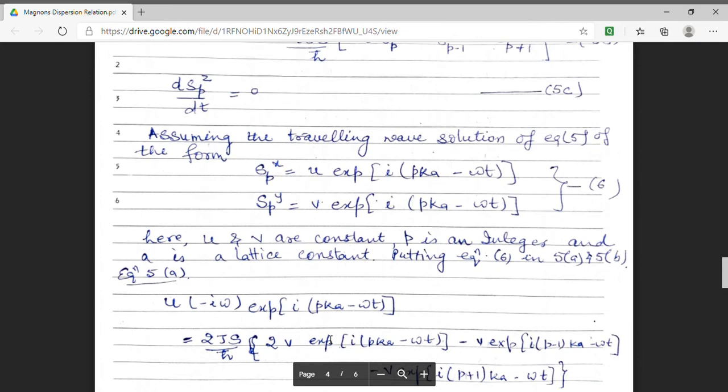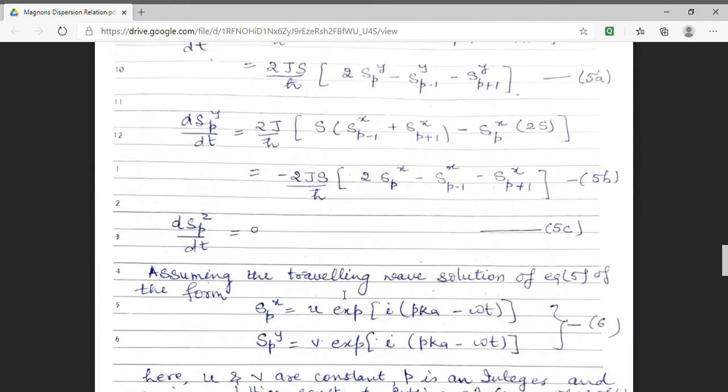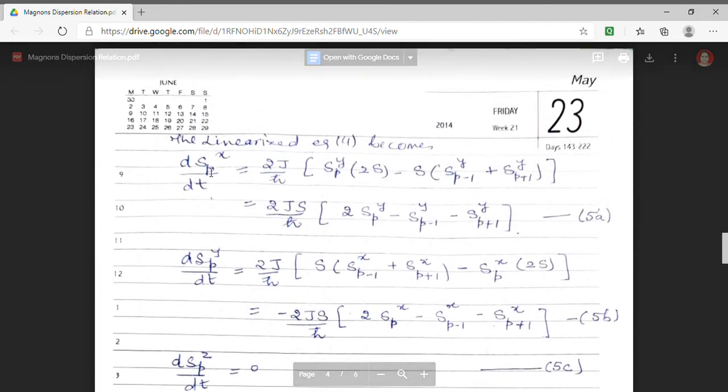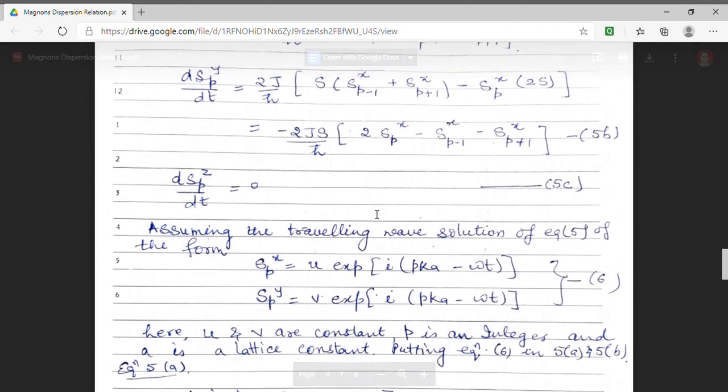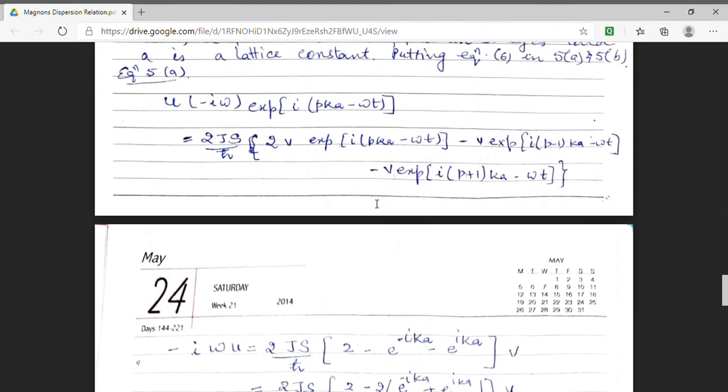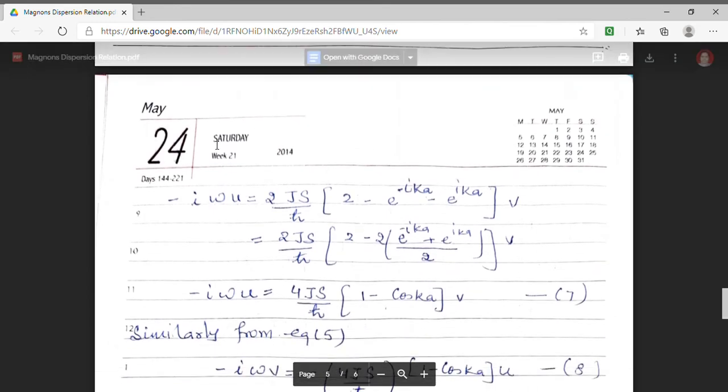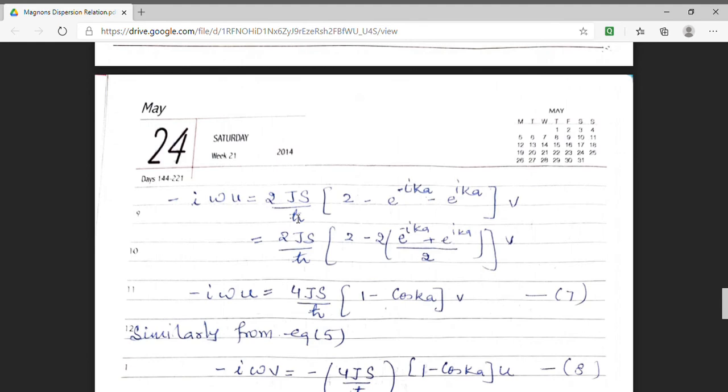Here, u, v are constraints and p is integer. Now, I have to find the, I am substituting spx and spy in my linear expressions. Substituting spx and spy. And, on solving them, this is the expression, which I have solved by using the expression of dspx upon dt. And, solving I get iota omega u equal to 4js upon h cross 1 minus cos ka multiplied by v.